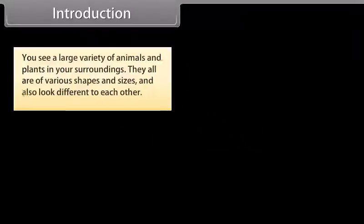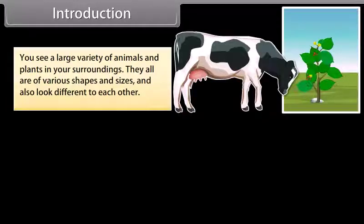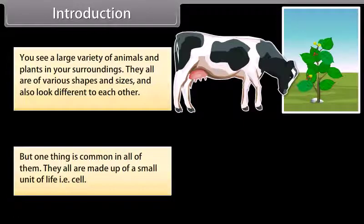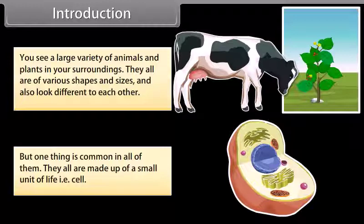You see a large variety of animals and plants in your surroundings. They all are of various shapes and sizes and also look different from each other. But one thing is common in all of them — they all are made up of a small unit of life, that is, the cell. In this module we are going to learn about cell and its structure.